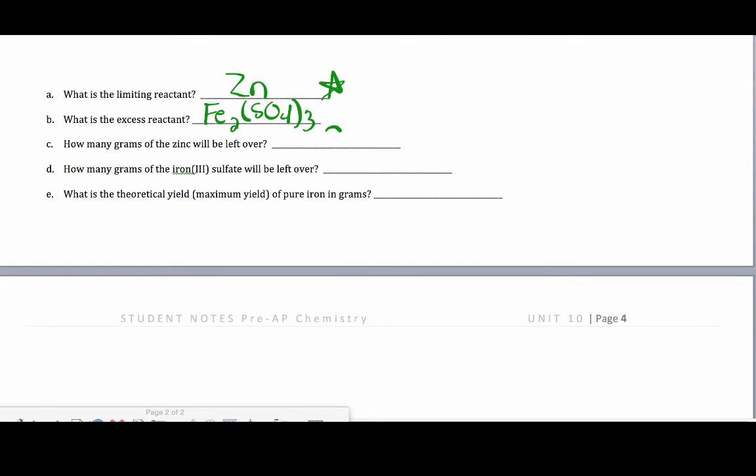It asks how many grams of zinc, well, by definition, it's the limiting. If there's zero moles, there are zero grams remaining. So, now it asks us how many grams of the iron(III) sulfate. Well, we know the moles. If we know the moles, we can get to mass. Mass to moles use molar mass.